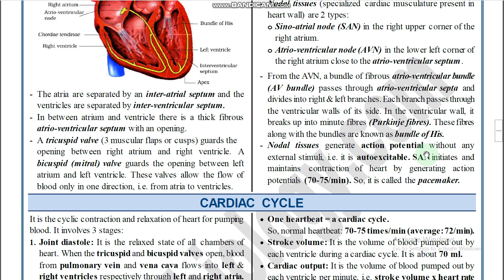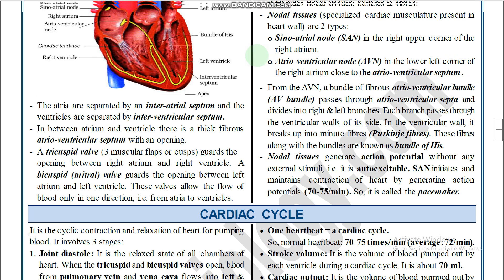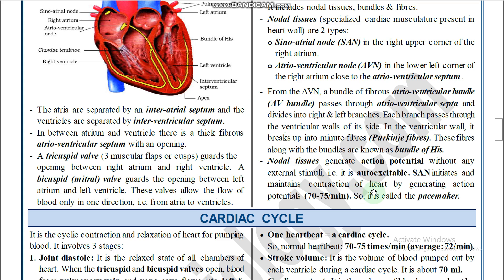Nodal tissue generates action potential without any external stimulation. Action potential is generated in the region of SAN. SAN initiates and maintains contraction of the heart, generating action potential at 70 to 75 beats per minute. Therefore, SAN is called the pacemaker of the heart. It is present in the upper right corner of the right atrium.